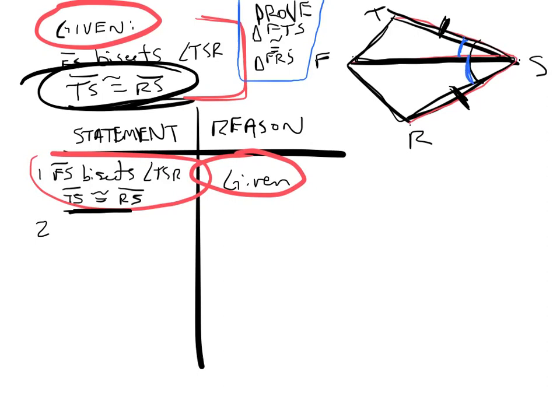Therefore, these two angles right here are congruent. We know that, but we have to write that. So we would say angle TSF is congruent to angle RSF. And how'd you know that? Well, that's the definition of an angle bisector.